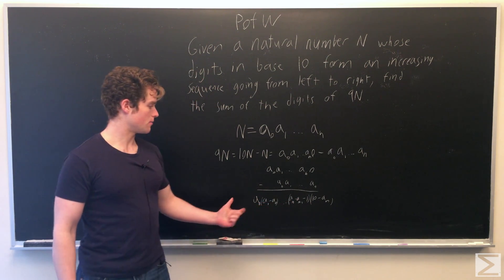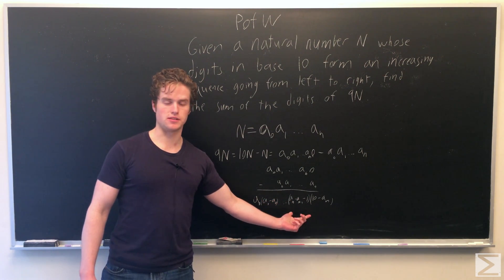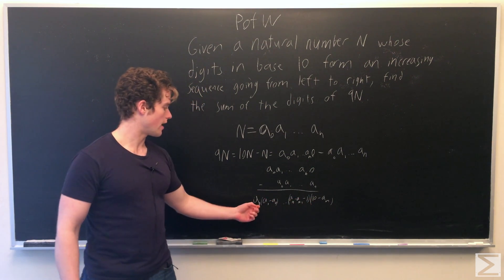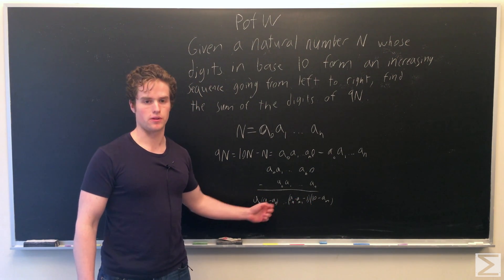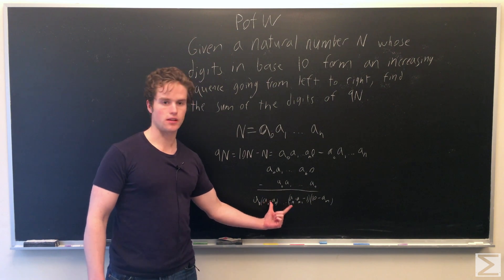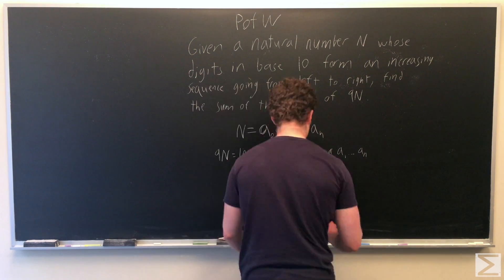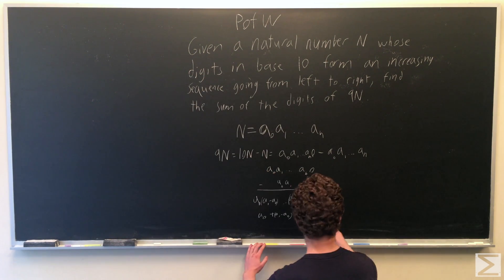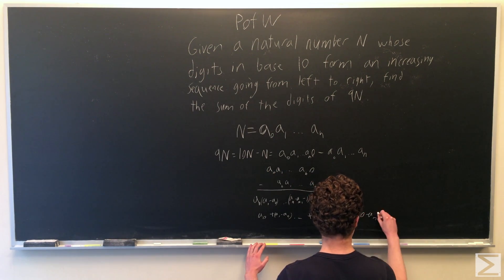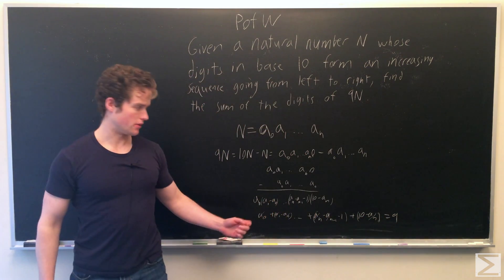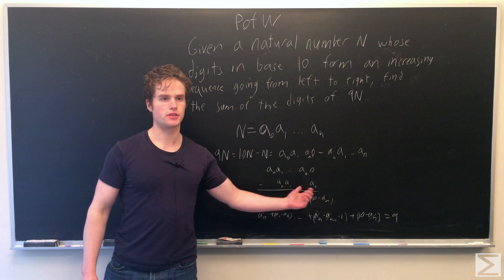So now we just need to sum all these digits, but there is lots of cancellation here. a0 cancels a0, a1 cancels a1, and we are going to note that in fact all the unknowns here just cancel out, and we are left with 10 minus 1, which is 9, which gives us our answer.